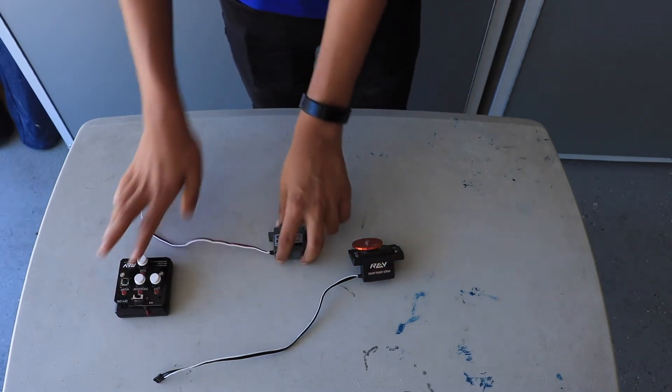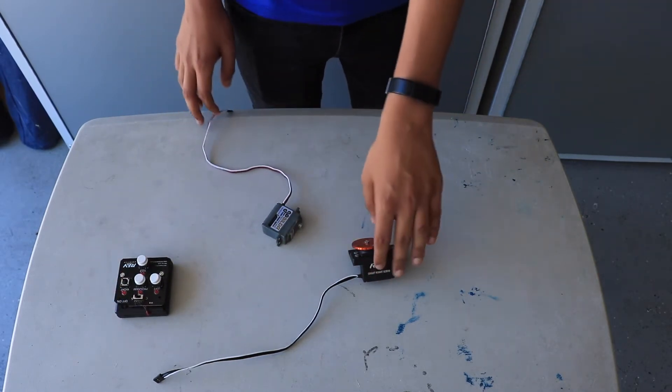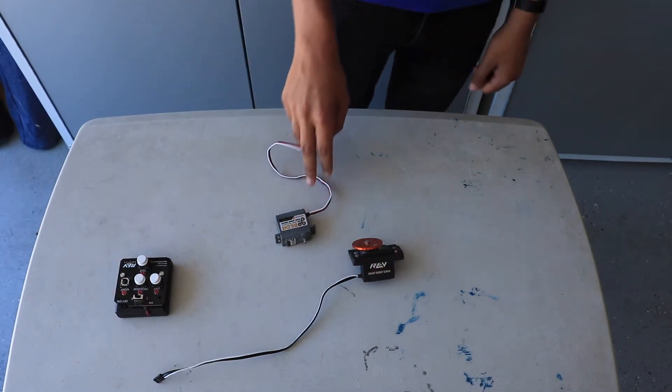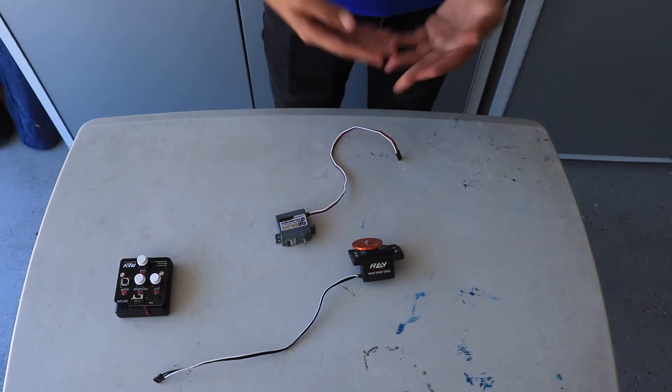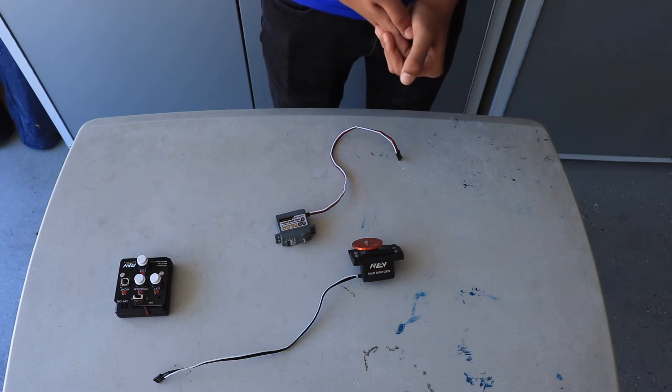Here we have a few different types of servos. This is a rev servo and this is a GoBuilder servo. Servos essentially contain a motor and feedback system.